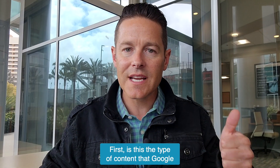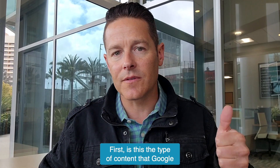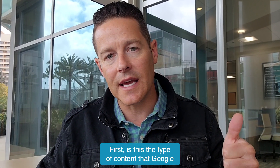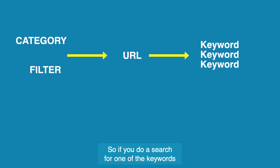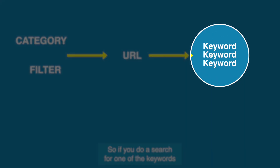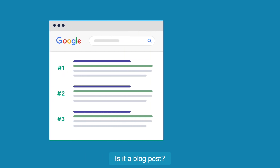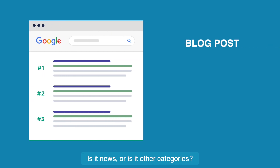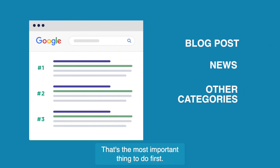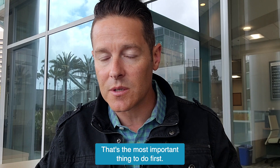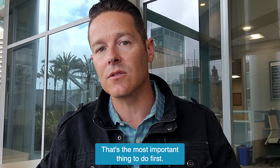Here's what you need to think about. First, is this the type of content that Google actually wants to rank? If you do a search for one of the keywords that you would optimize this category or filter page for, what comes up in Google? Is it a blog post? Is it news? Or is it other categories? That's the most important thing to do first.